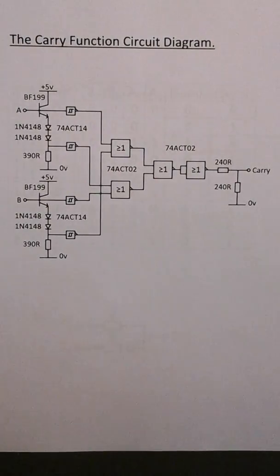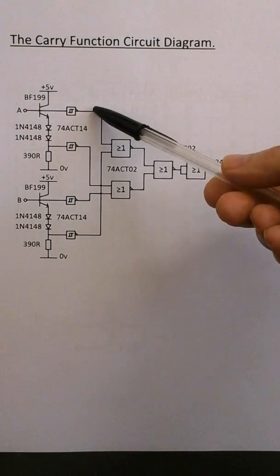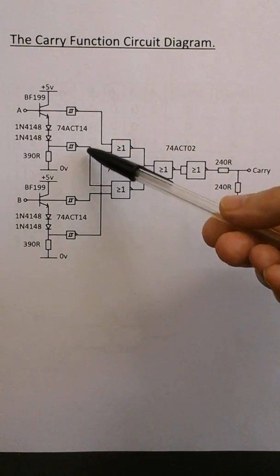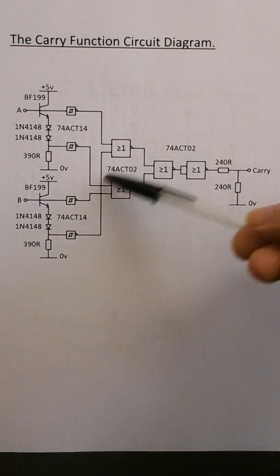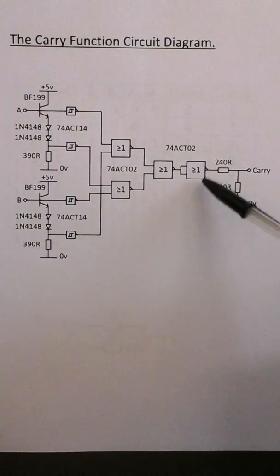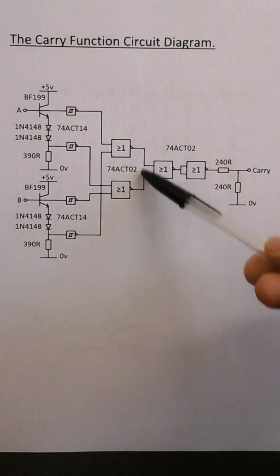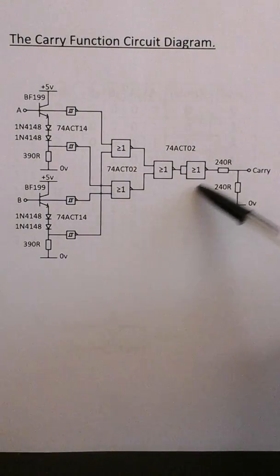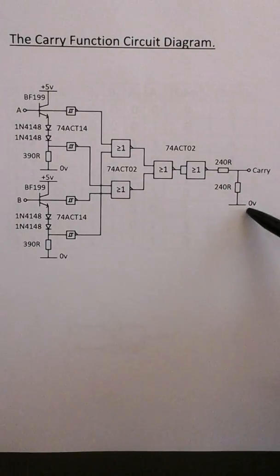Here is the circuit diagram for the carry function. This is NOT a1, NOT a2, and this is NOT b1, NOT b2. These are the NOR functions for the two terms in the Karnaugh map. A NOR function is used as an inverter here to give the overall NOR function. The output resistors are 240 ohm resistors, and one of the inputs is connected to zero volts. That's the carry function.